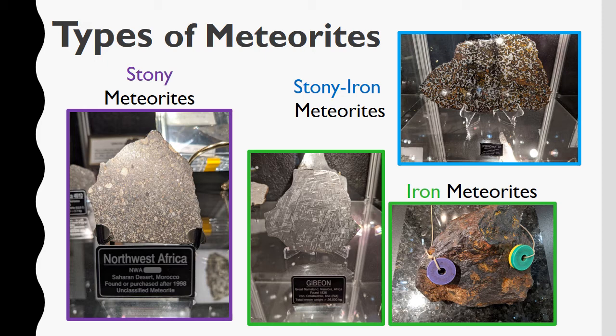Finally, stony-iron meteorites. Stony-iron meteorites have a similar amount of silicate minerals and iron, so they are both stony and iron. There are two types of stony-iron meteorites: pallasites and mesosiderites. The stony-iron meteorite in the picture is a beautiful pallasite made up of iron and nickel as well as the mineral olivine. For those who have August birthdays, you've seen olivine before — your birthstone peridot is the same as olivine.